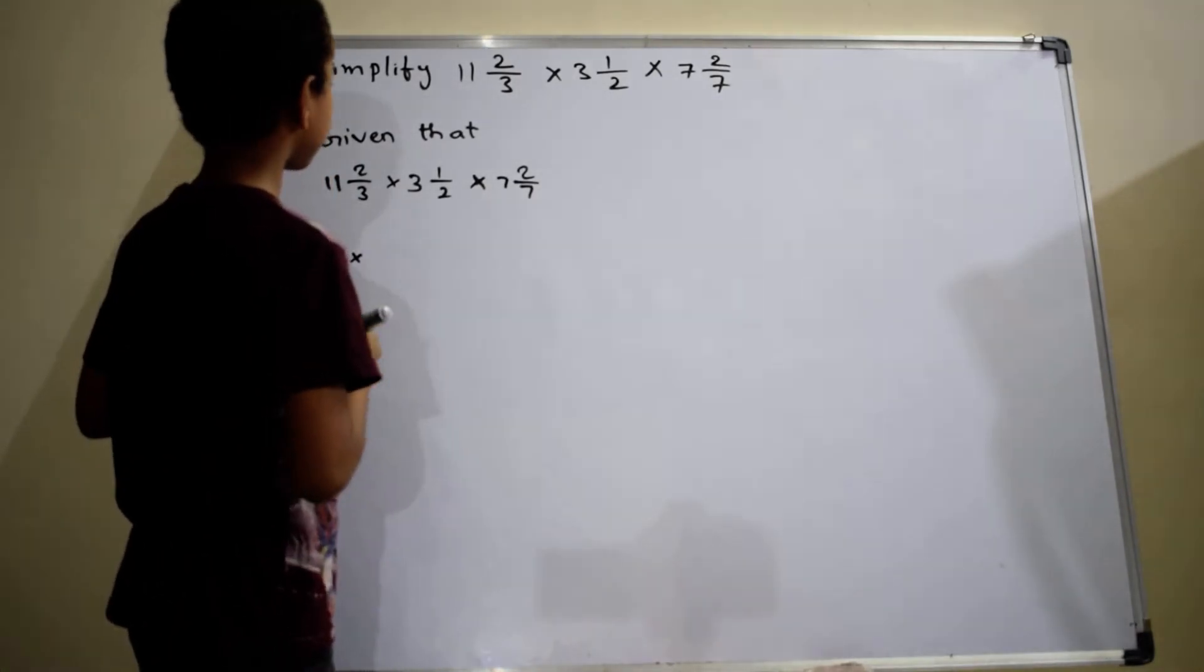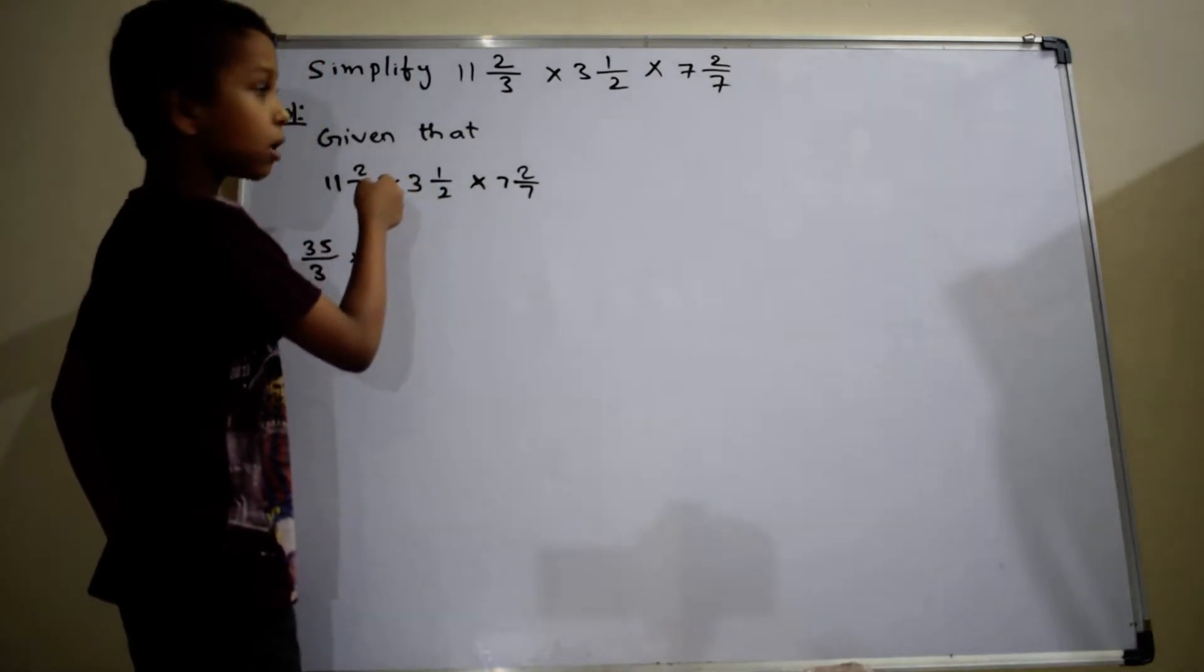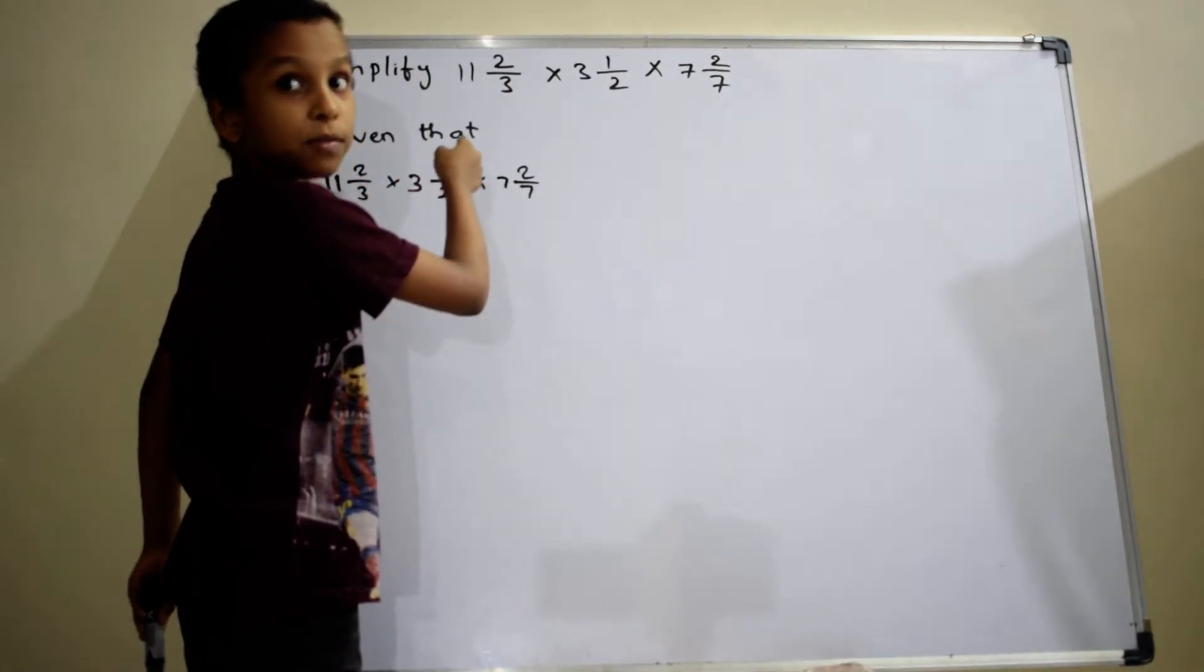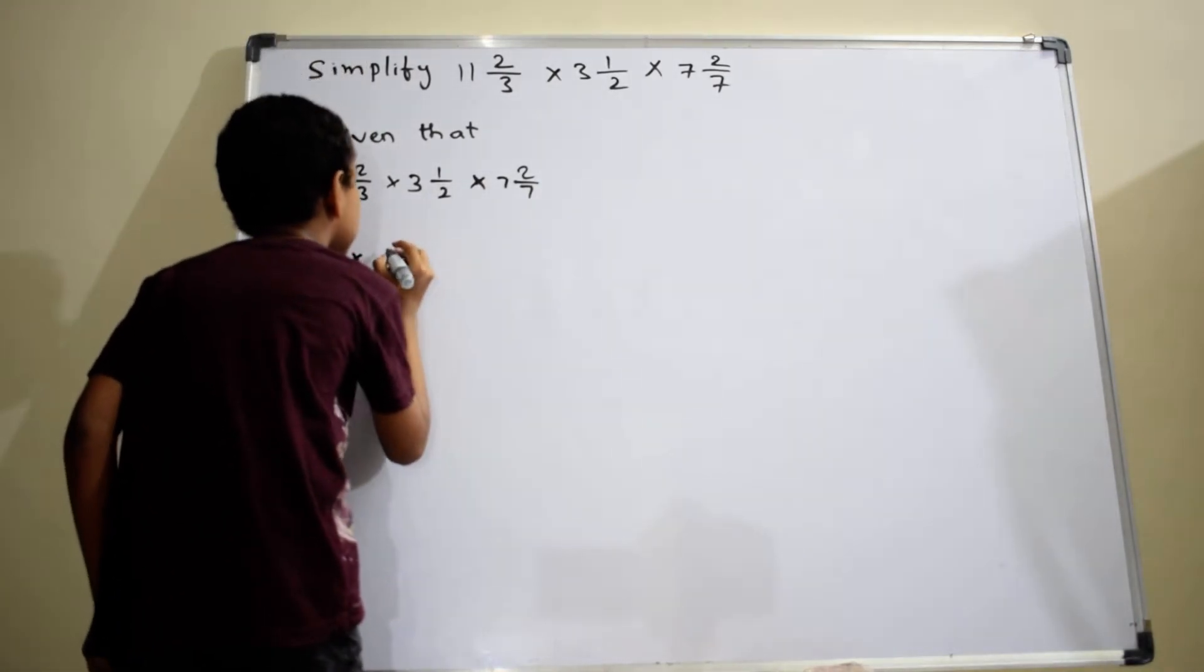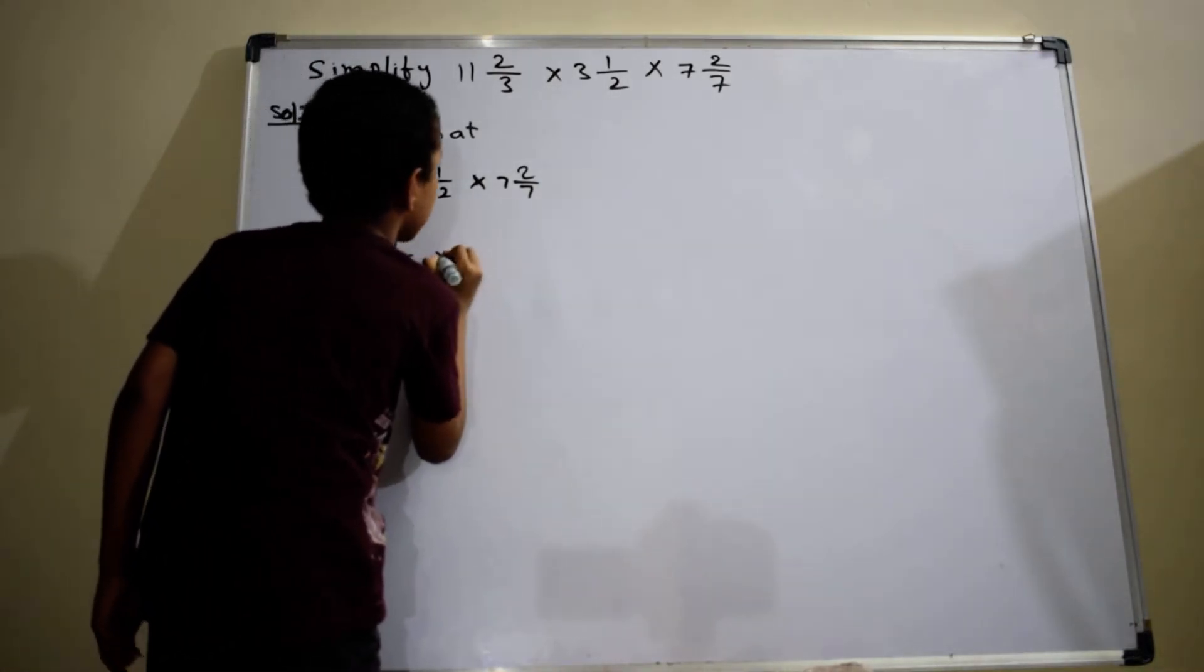Similarly, 2 into 3 equals to 6. 6 plus 1 equals to 7, which is equal to 7 by 2 into.